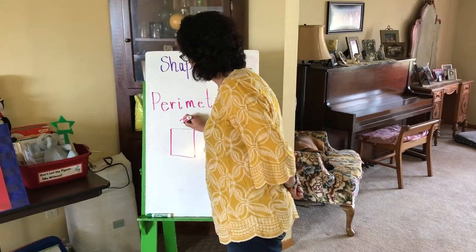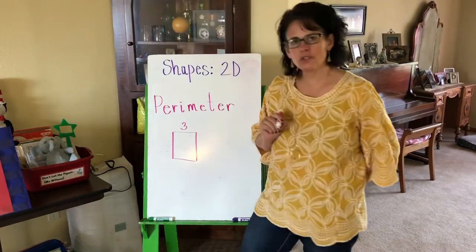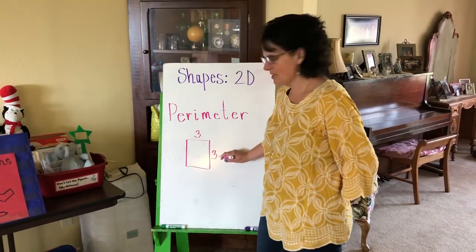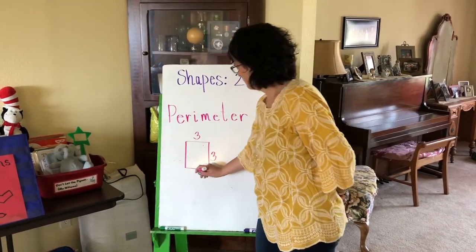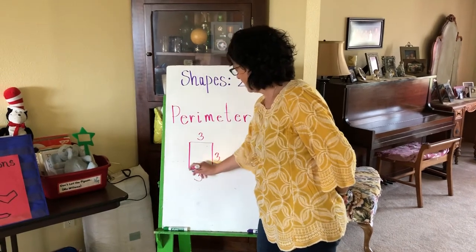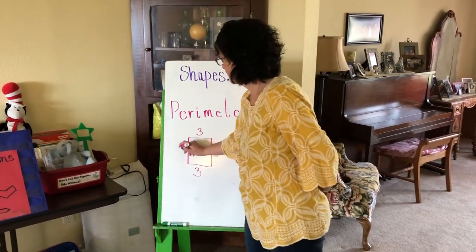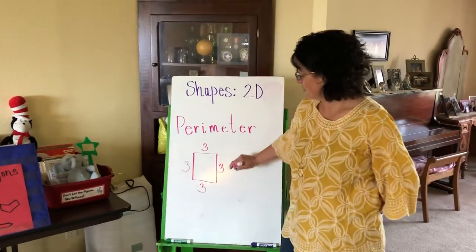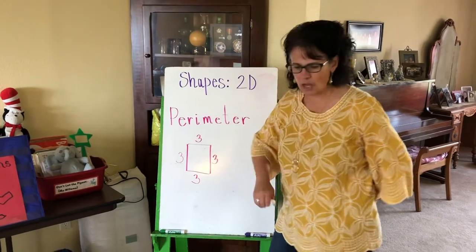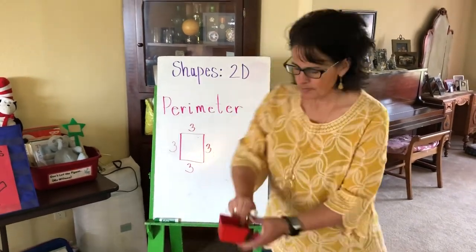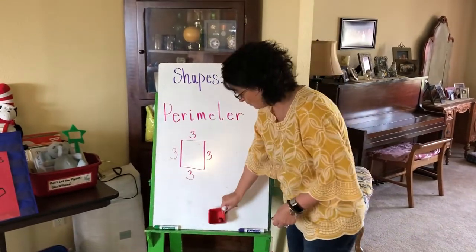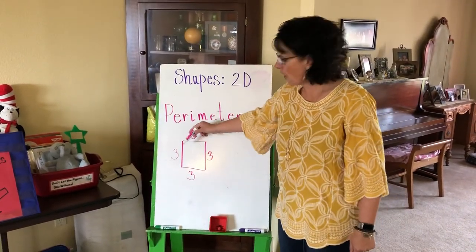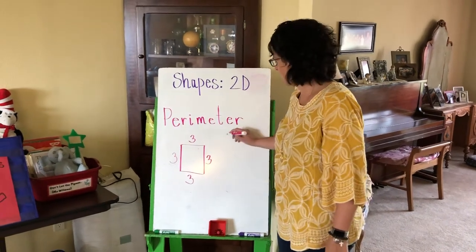On the whiteboard, I'll pretend this is the ladybug's box. We measured one side — three inches long. We measured the second side — three inches long. The third side — three inches long. And the last side — three inches long. Notice that each side of this ladybug's house was equal. Not everything you measure will be equal, but this one was.